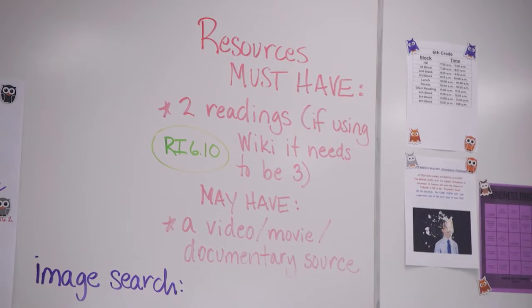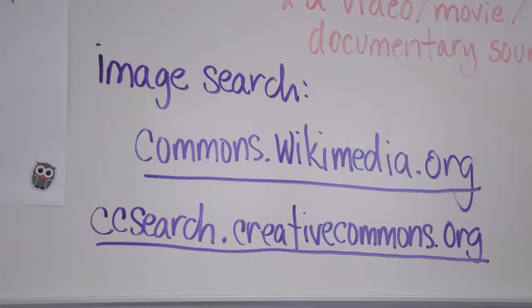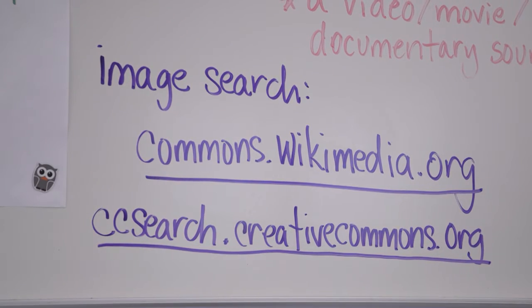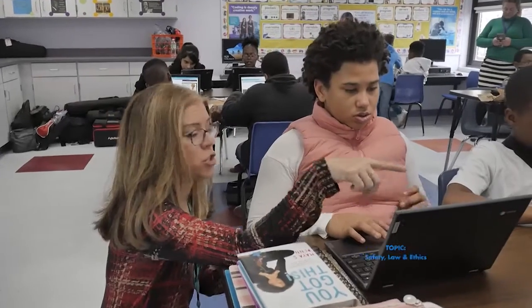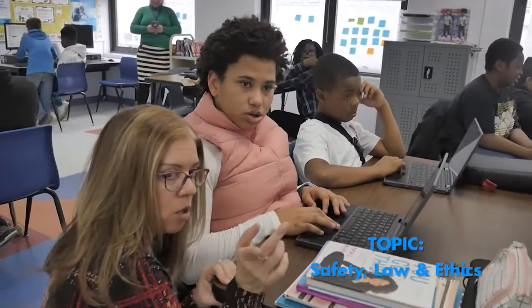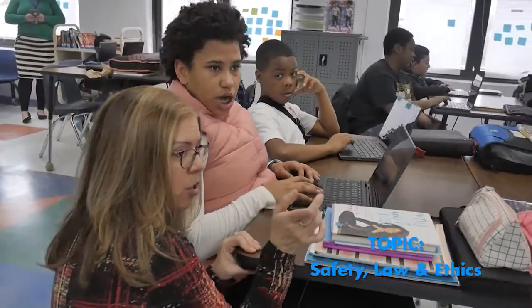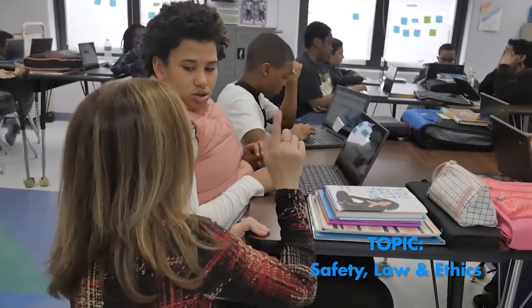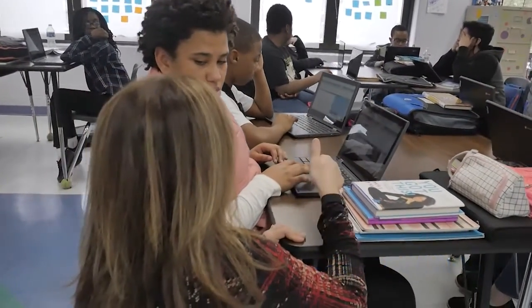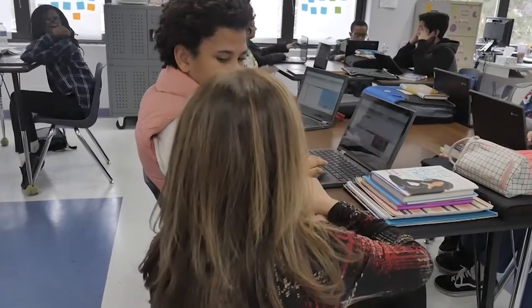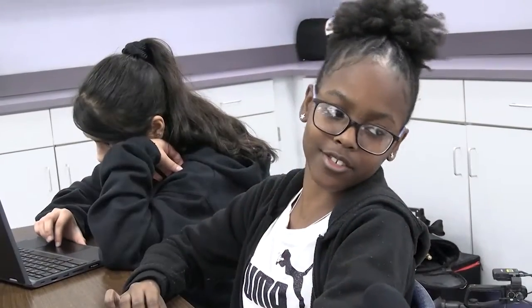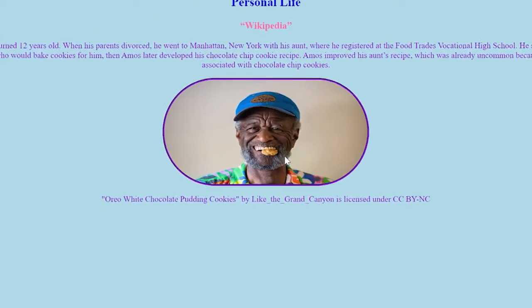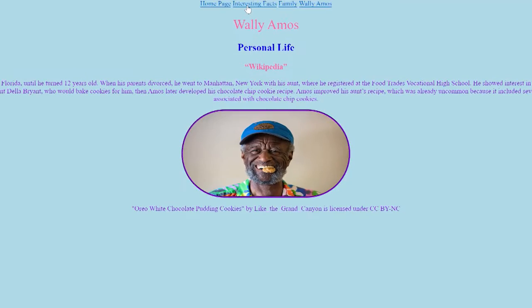They're also learning digital citizenship — knowing where to look for information and how to share it. Go out and search. Use commons.wikimedia.org or ccsearch.creativecommons.org. When you find an image, flag me down and I'll show you what to do. It's way easier than I thought. I thought it was going to be harder, but it's not once you do it.